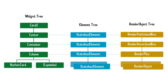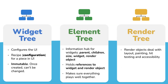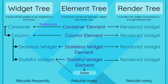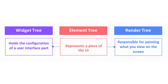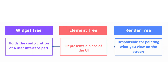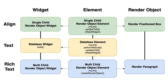For the render tree, the render tree represents the visual and layout information needed to paint the user interface on screen. Each widget in the widget tree has a corresponding render object in the render tree. Render objects are responsible for rendering the visual representation of the widget on screen. When a change occurs in the widget tree, Flutter updates the corresponding element in the element tree, and the element then updates the render object in the render tree. This separation of widget tree, element tree, and render tree allows Flutter to efficiently manage and update the UI without rebuilding the entire tree when only one portion changes.